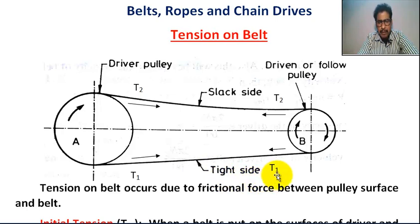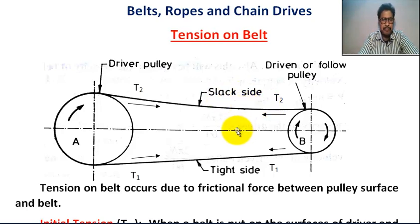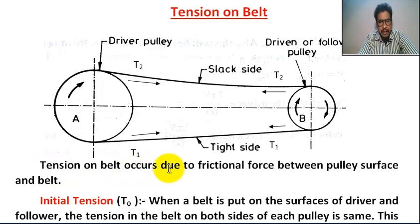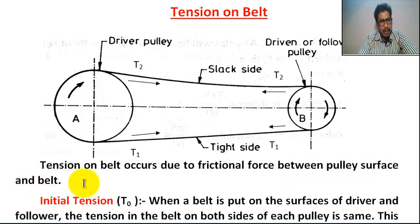T1 is the tension on the belt on the tight side. T2 is the tension on the belt on the slack side. Tension on the belt occurs due to frictional force between the pulley surface and the belt.